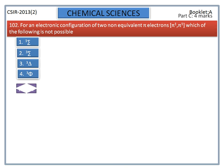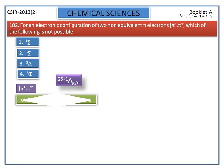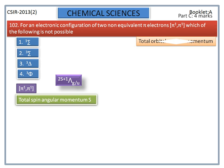The given two non-equivalent pi electrons are π1, π1. The molecular term symbol form is 2S+1, Λ, gerade or ungerade, where S is the total spin angular momentum and Λ is the total molecular orbital angular momentum.